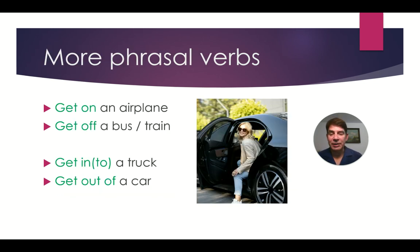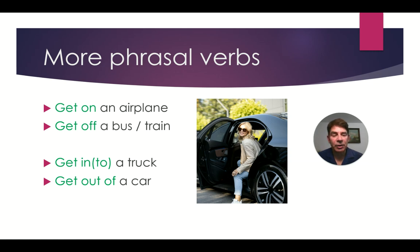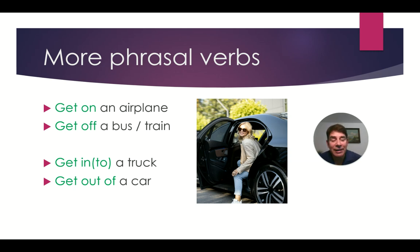Here are some more phrasal verbs in English with GET: get on, get off, get in or get into, and get out of. What's the difference between these? Well, the difference is in the mode of transportation. We get on an airplane, get on a bus, or get on a train. We also get off a bus, boat, or train. We get into a truck, or into a taxi, or into or out of a car. With 'get on,' we're standing and walking onto the mode of transportation. With 'get in' and 'get out of,' we have to move our body down — we have to bend or scrunch down to get into the car.